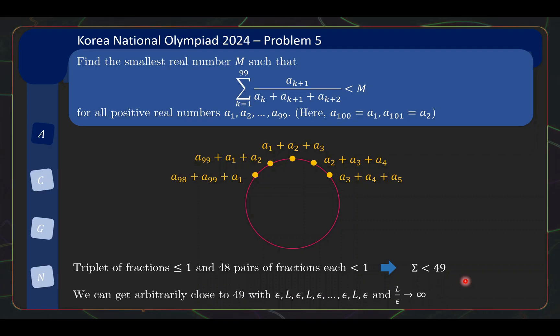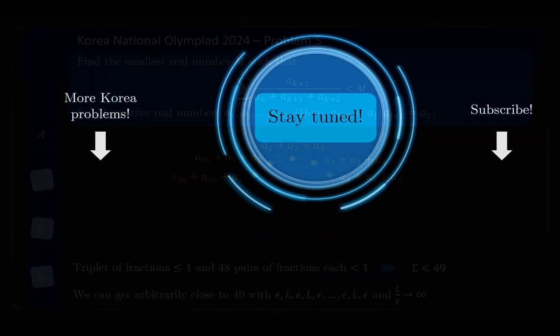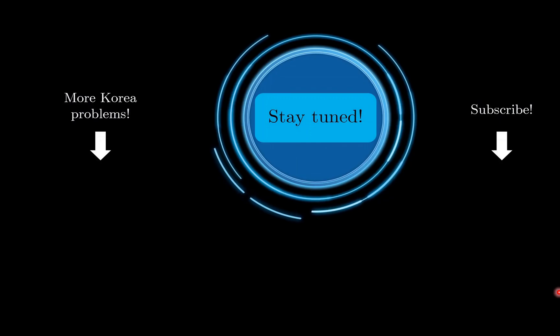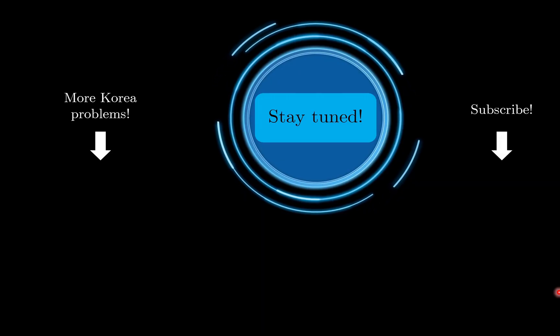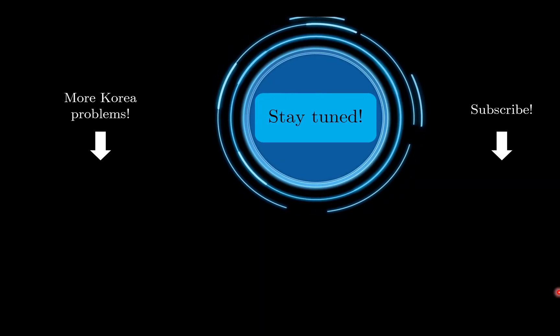And of course, we can get arbitrarily close to 49 with the construction we showed earlier, epsilon, L, epsilon, L, where we let L get to infinity and epsilon get to zero. So this is all there is to this question. I hope you found the question manageable but still quite an interesting problem to look at. Now, stay tuned to the channel for more math videos and I'll see you soon. Thanks for watching.